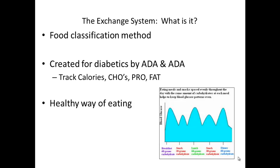The exchange system is a classification method. Foods are placed into 8 food groups based on the similarity in macronutrient and energy or calorie content. For example, cheese and eggs are in the meat group because they contain approximately the same amount of protein, fat, and calories as one ounce of chicken or lean beef. Corn, peas, and potatoes are all included in the starch-bread group because they contain similar amounts of carbohydrate, fat, protein, and calories as a slice of bread or other starchy item.